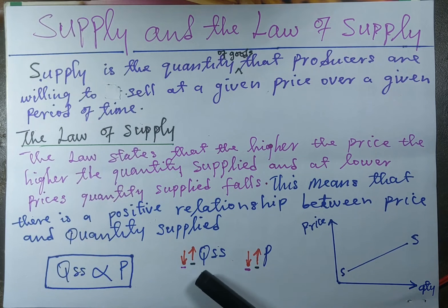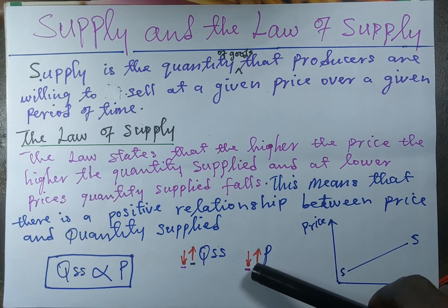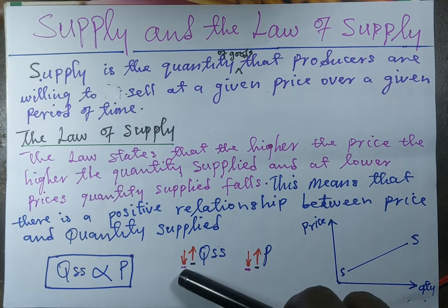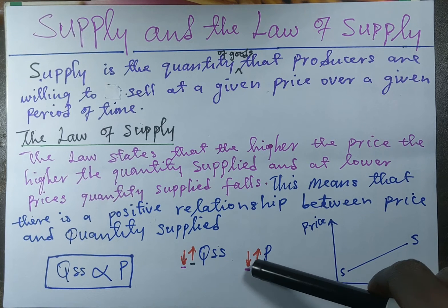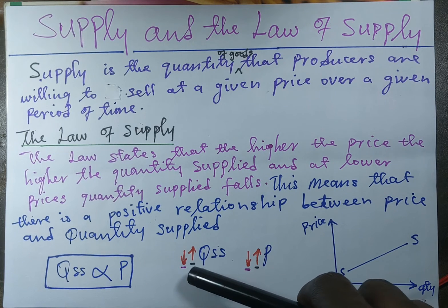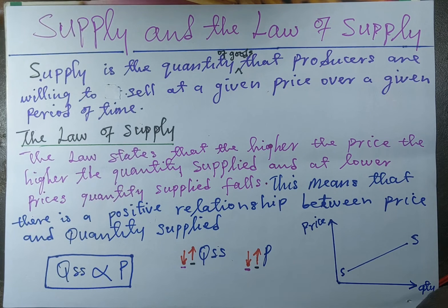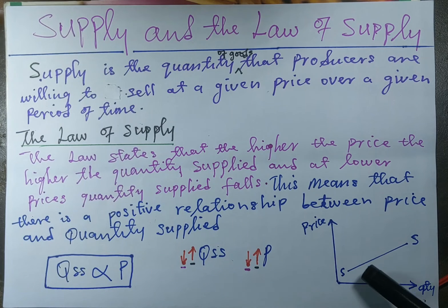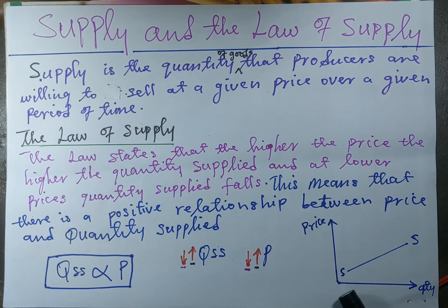When price falls, quantity supplied falls, and when price increases, quantity supplied also increases. That's why the supply curve slopes upward, as shown on the supply curve — as price increases, quantity supplied also increases. That's it for the short video of today.